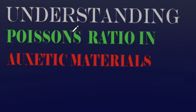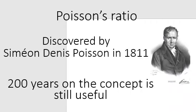Hi there, welcome to this channel. In this video we are going to understand Poisson's ratio with specific focus on oxidic materials. The concept of Poisson's ratio was developed by a French physicist, mathematician and engineer, Siméon Denis Poisson, in 1811. Over 200 years down the line, we still find the concept useful in studying the mechanics of our materials.